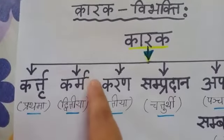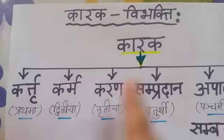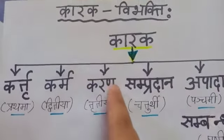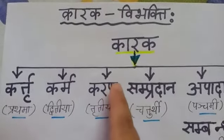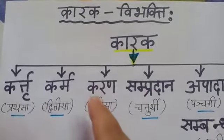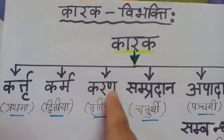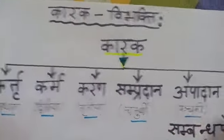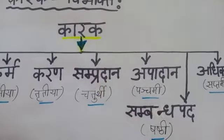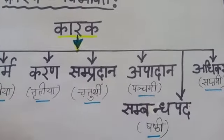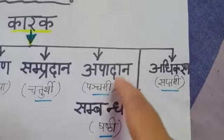Next: karma karak — that means 'to whom' or 'to what'. Karma karake always takes dvitiya vibhakti. Next: karana karak — always tritiya vibhakti, meaning 'with'. Karana karak always comes with the meaning 'with'. Sampradana karak means giving or gift — like jachati, dadati. Sampradana karake always takes chaturthi vibhakti.